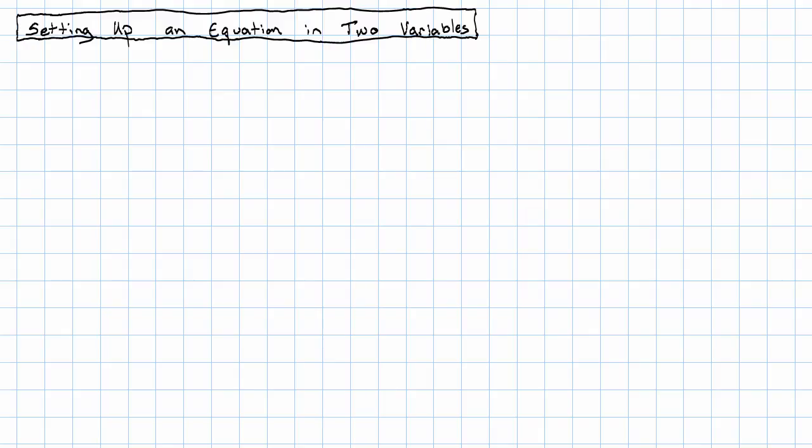So far, we've seen several techniques that we might use in order to set up an equation in two variables. How do we decide on a technique? And more generally, how do we get started if we just encounter a situation out of the blue?